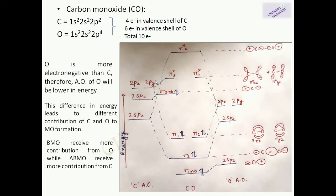In addition, the properties of bonding molecular orbitals are similar to the atomic orbitals of oxygen because they are close to oxygen's atomic orbitals. The properties of antibonding molecular orbitals are similar to the atomic orbitals of carbon because they are more close to carbon's atomic orbitals.